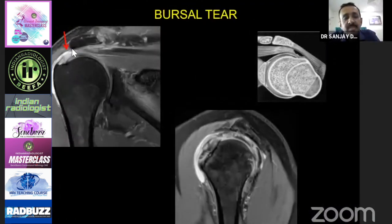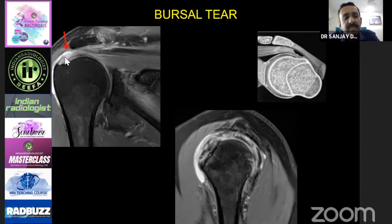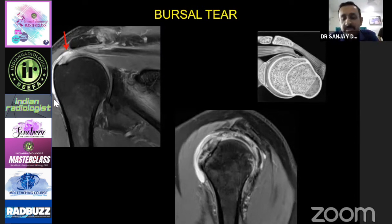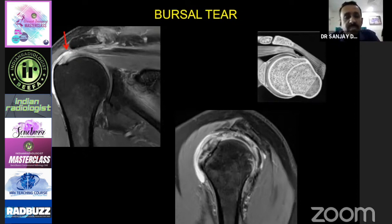This is an example of a bursal surface tear. The articular surface is intact — this black line is your supraspinatus tendon articular surface and insertion — but there is discontinuity of the bursal surface. Whenever there is a bursal surface tear, there is what is called a puddle sign — fluid collection along the lateral aspect of the greater tuberosity. This occurs because there is rupture of the wall of the subacromial deltoid bursa and fluid leaks into that space. If you identify this fluid, you can confidently diagnose a bursal surface tear.